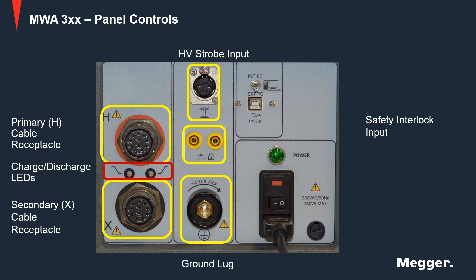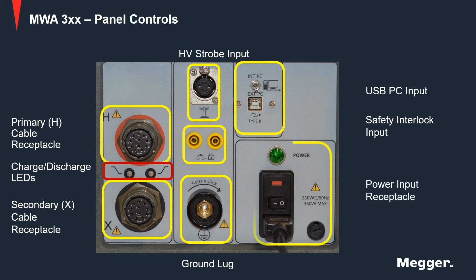Further, you have the PC input USB host for PC control connection of the MWA. The toggle switch is used to select external as well as internal control of the instrument. When the onboard touch screen is used, the internal PC has to be selected using the toggle switch. If an external laptop computer is used, the external PC position has to be selected. Next, you have the power input receptacle with the on-off switch and the mains fuse holder.